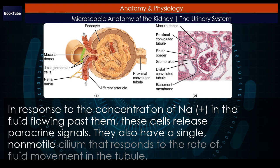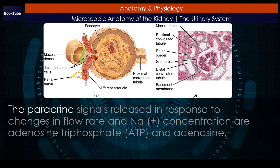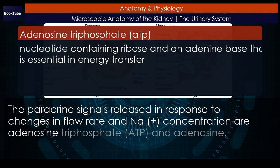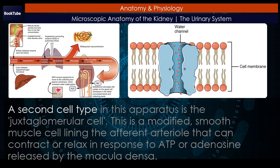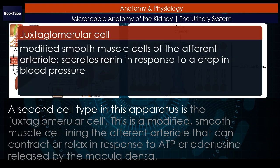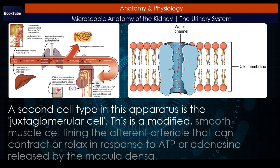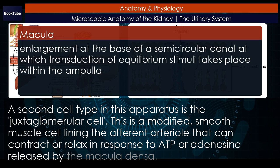They also have a single non-motile cilium that responds to the rate of fluid movement in the tubule. The paracrine signals released in response to changes in flow rate and Na⁺ concentration are adenosine triphosphate (ATP) and adenosine. A second cell type in this apparatus is the juxtaglomerular cell — a modified smooth muscle cell lining the afferent arteriole that can contract or relax in response to ATP or adenosine released by the macula densa.